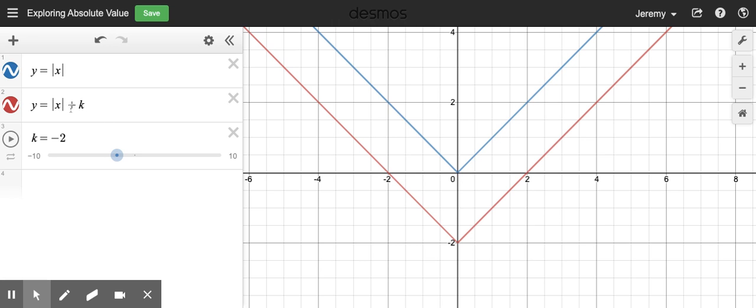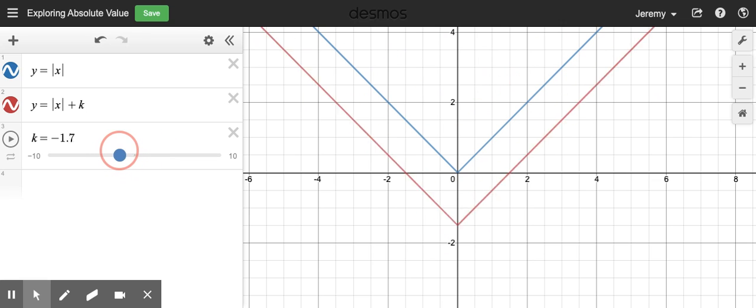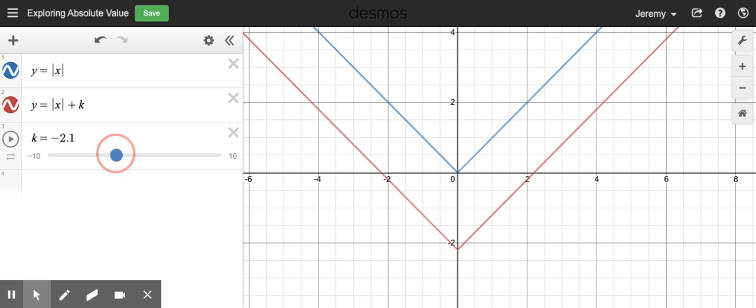In part two, we generalized the idea of adding a number, whether positive or negative, to this original graph, and that caused the graph to shift up or to shift down.